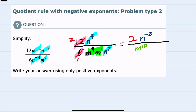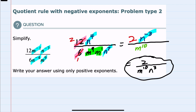We have combined all of those like variables. However, I do have a negative exponent — this N-3 in the numerator — and I want to write that as a positive exponent. The 2 has a positive exponent, so it can stay in the numerator. The M10 has a positive exponent, so it can stay in the denominator. The N-3 would need to move to become positive, so in the denominator I would have an N3. This is our simplified expression with only positive exponents.